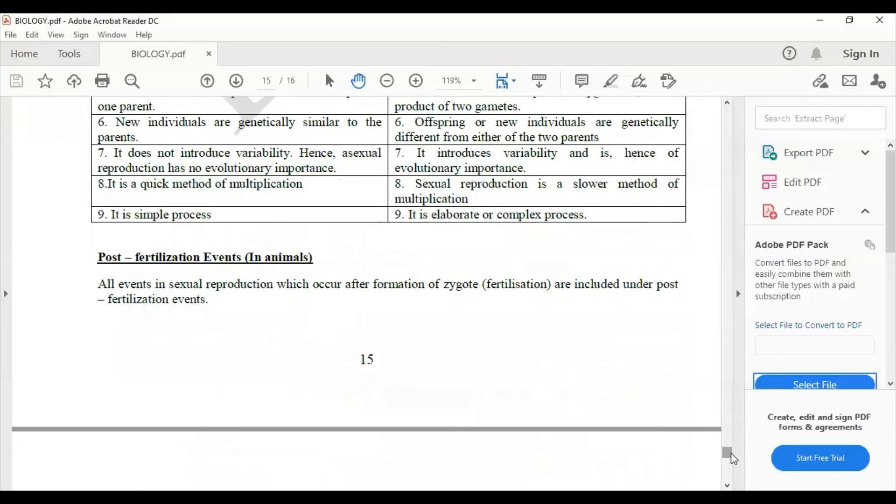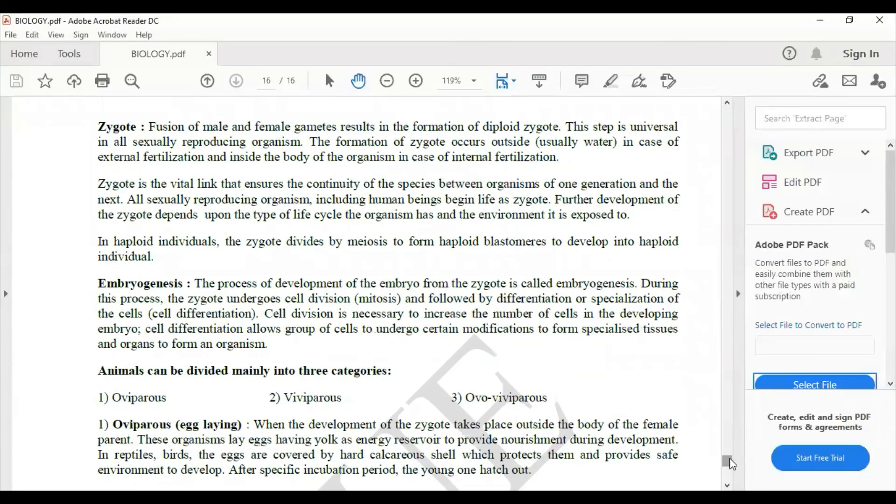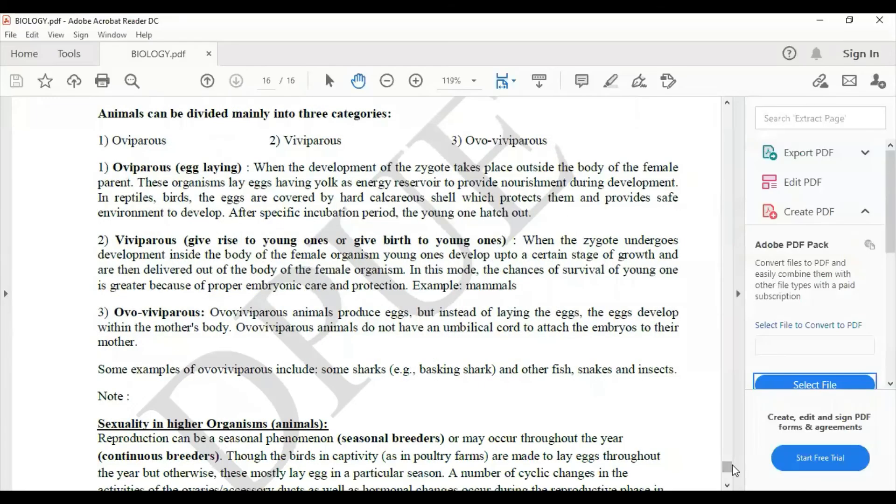Moving on, this is post-fertilization event. So the post-fertilization event is carried by zygote followed by embryogenesis, and embryogenesis can be categorized or divided into three categories - oviparous means egg laying, viviparous give rise to young ones.